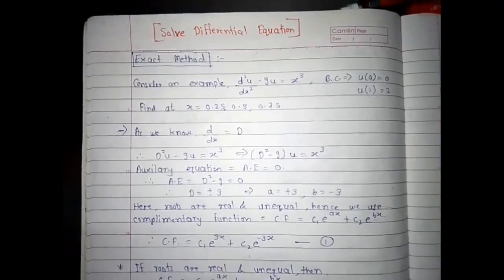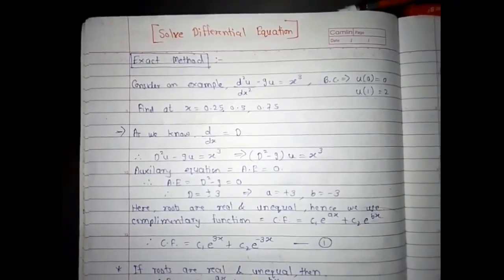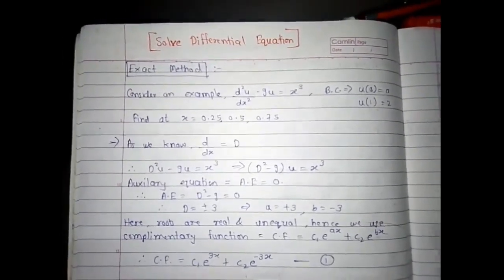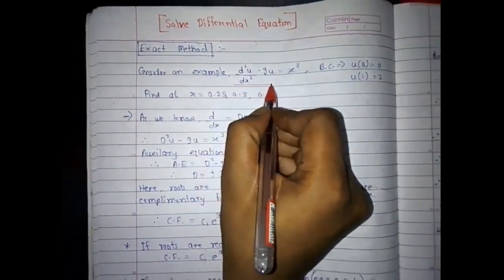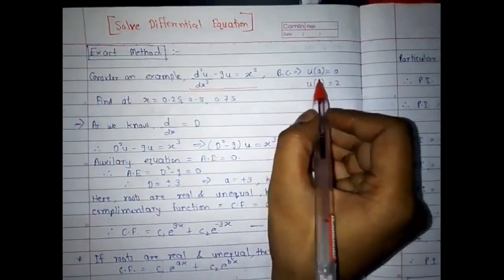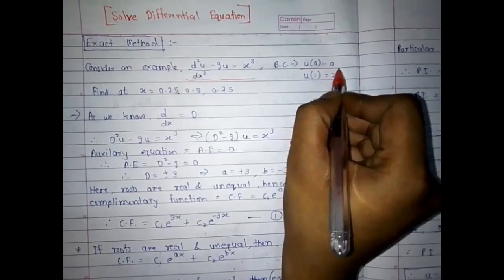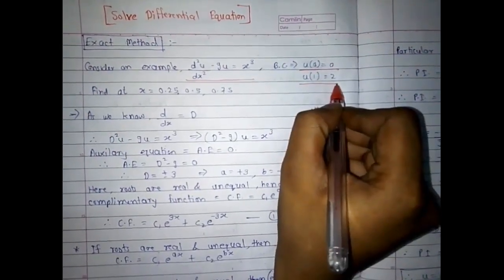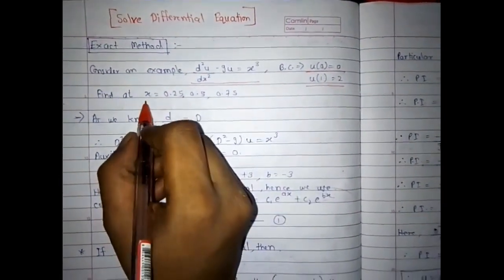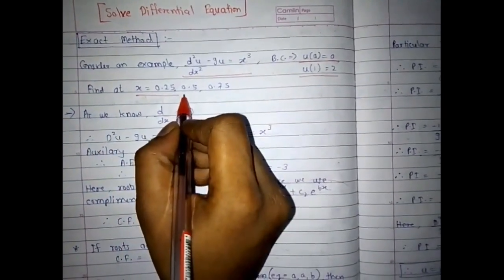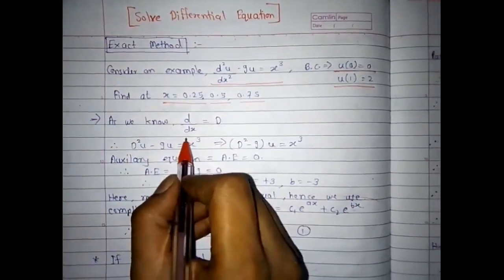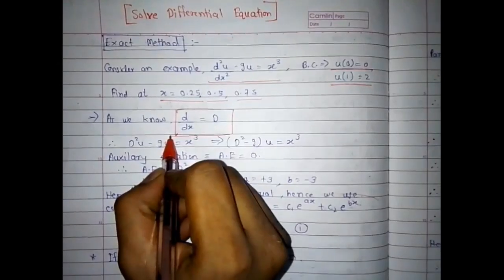Hello friends. In this video we will see how to solve differential equations using the exact method. Let us consider an example: d²u/dx² minus 9u is equal to x³, with boundary conditions u(0) = 0 and u(1) = 2. We have to find the value of u at x = 0.25, 0.5, and 0.75.